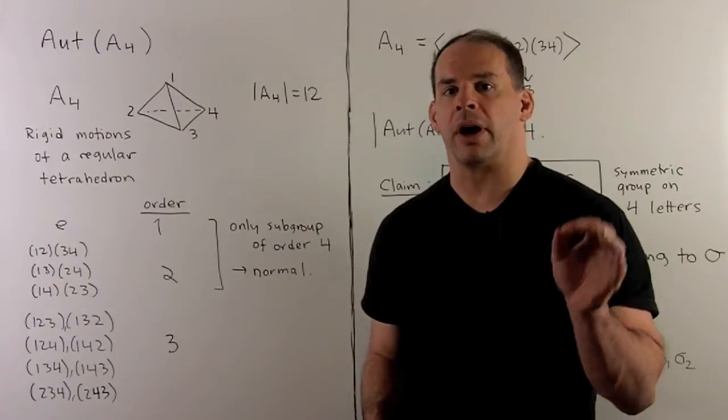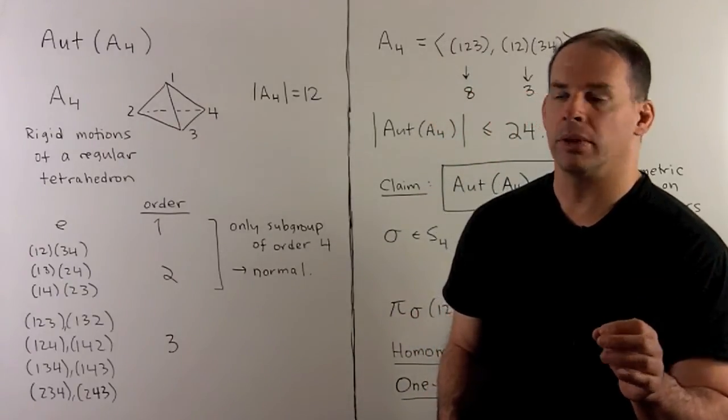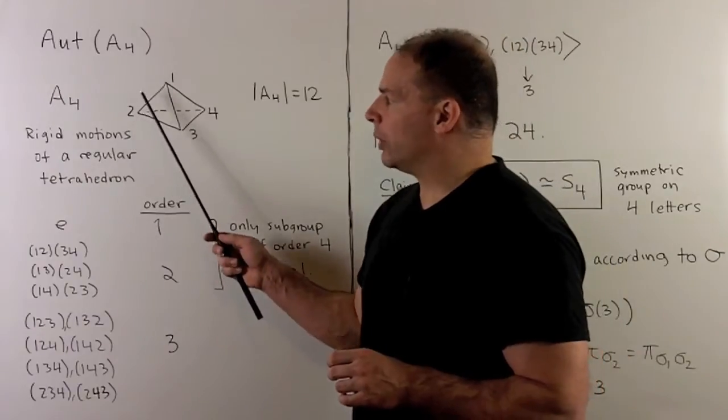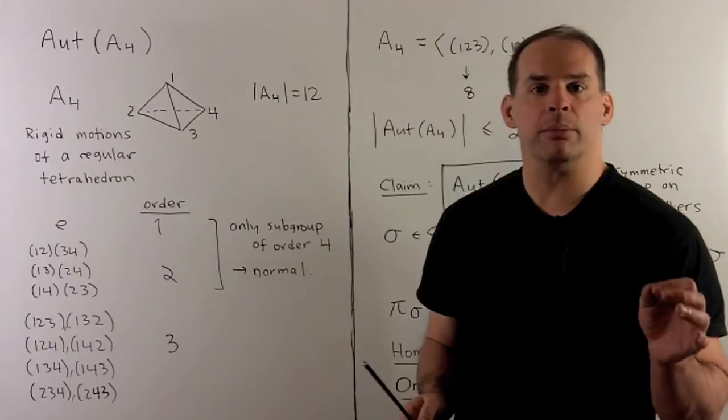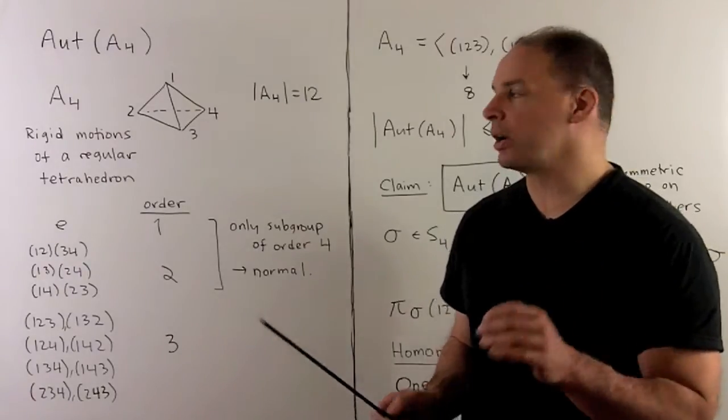Let's find the automorphism group for A4, the alternating group on four letters. Recall, we can realize A4 as the rigid motions of a regular tetrahedron, so the order of A4 is equal to 12.